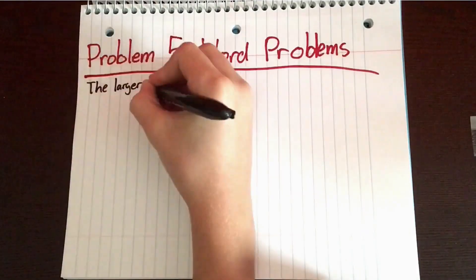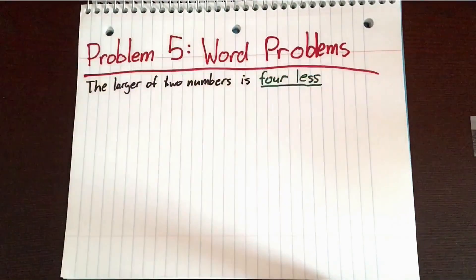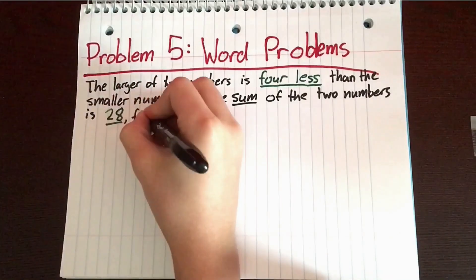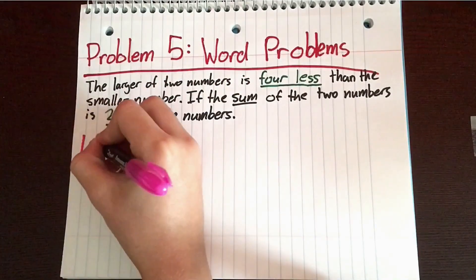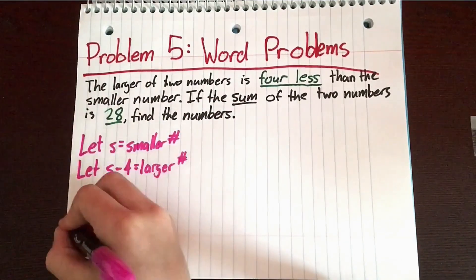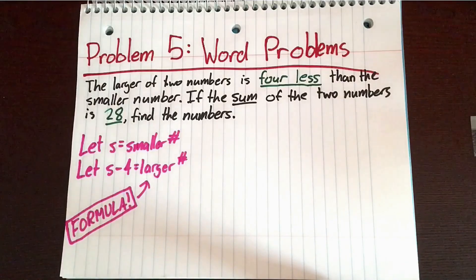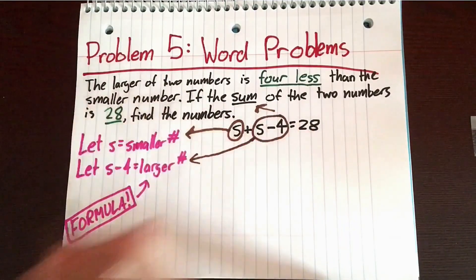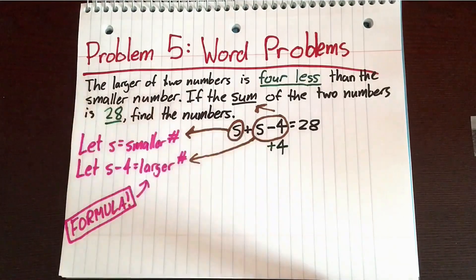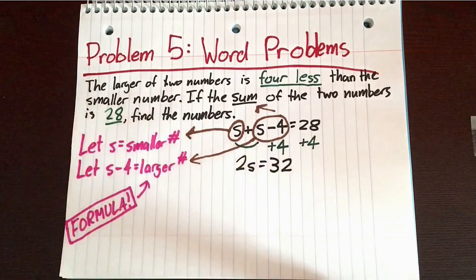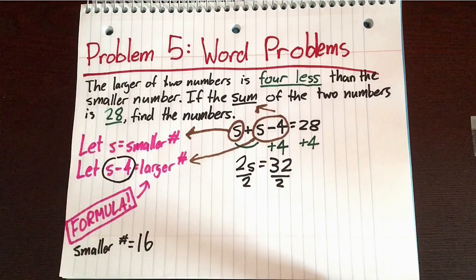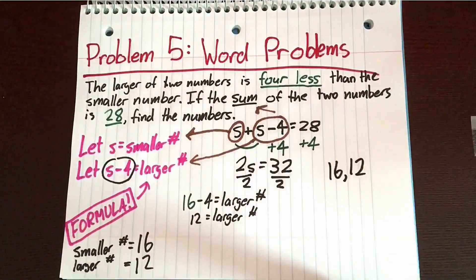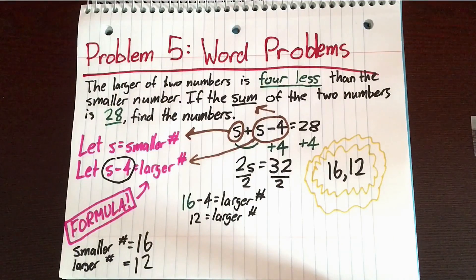Problem 5: word problems. The larger of two numbers is 4 less than the smaller number. If the sum of the two numbers is 28, find the numbers. We let s equal the smaller number and s minus 4 equal the larger number. So we have s plus (s minus 4) equals 28. We add 4 to both sides to get 2s equals 32, then divide by 2. The smaller number equals 16. We plug in to find the larger number: 16 minus 4 equals 12. Our answer is 16 and 12.